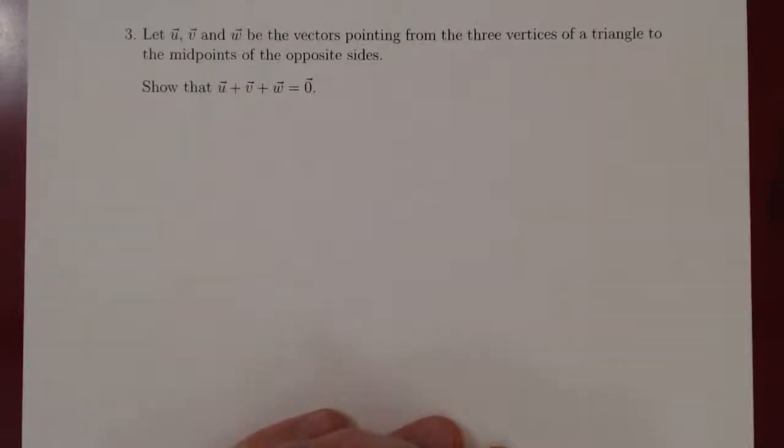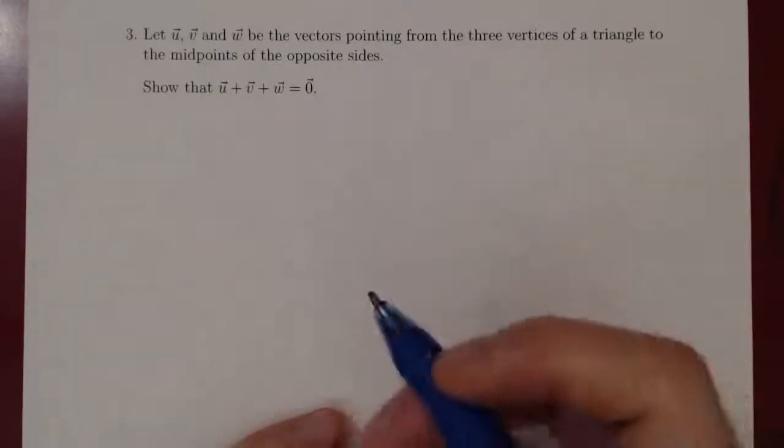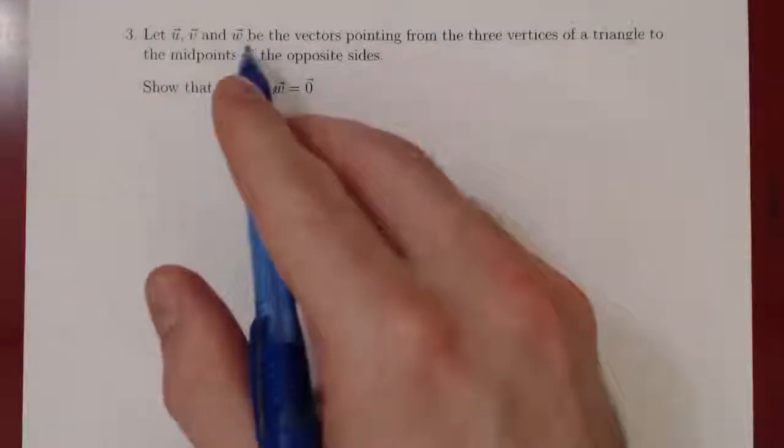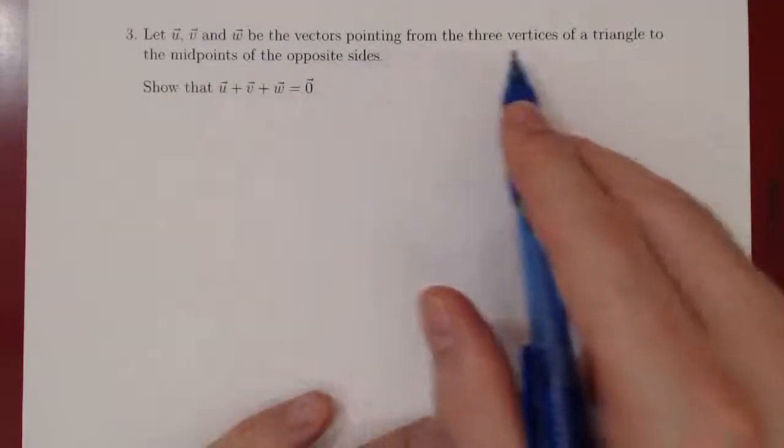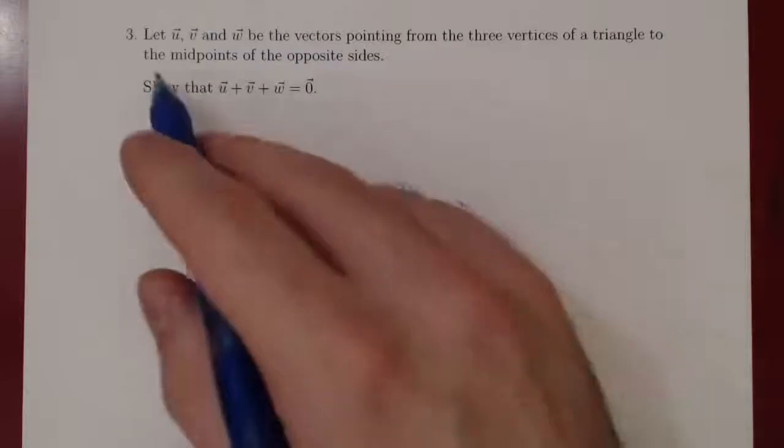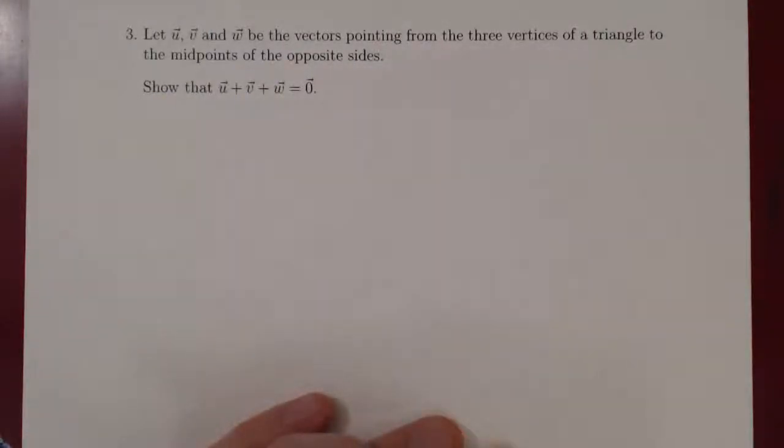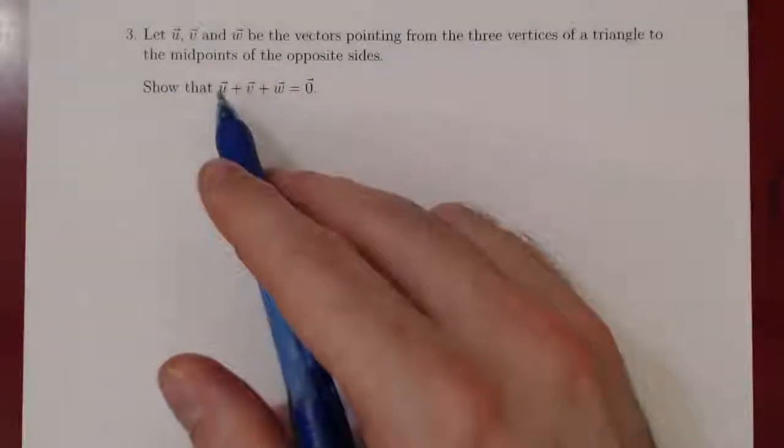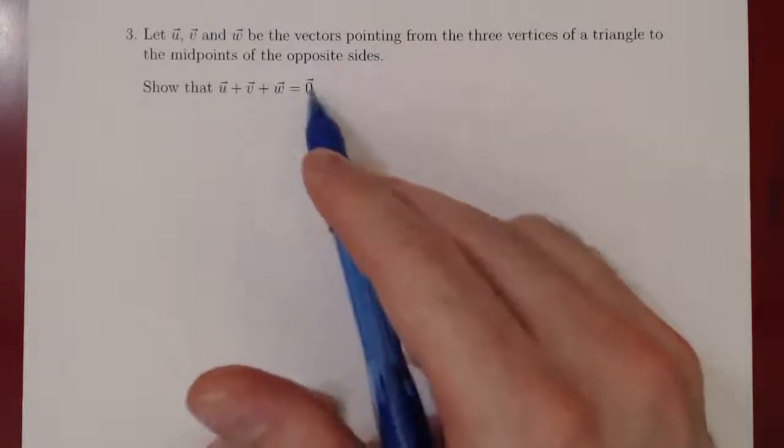Okay, so here's one more problem involving geometric vectors. So what is the problem? We're given three vectors that are pointing from the three vertices of a triangle to the midpoints of the opposite sides. And the claim is that if we add these three vectors up, we get the zero vector.